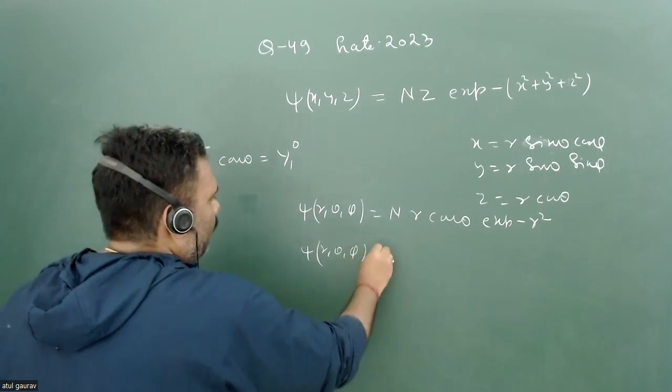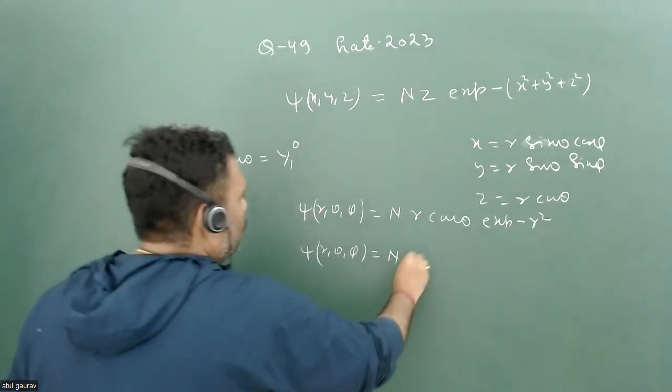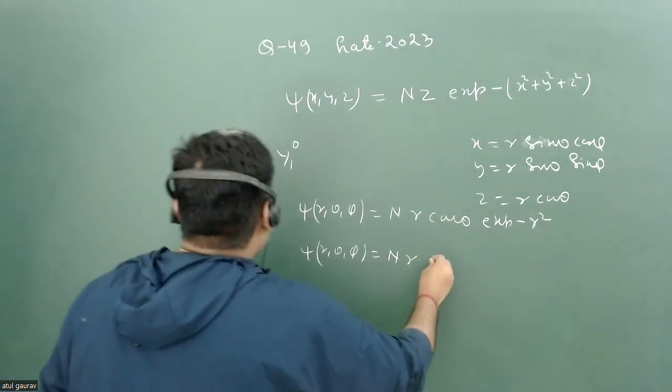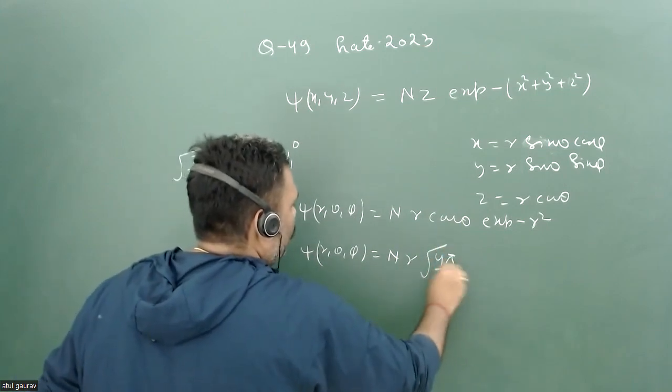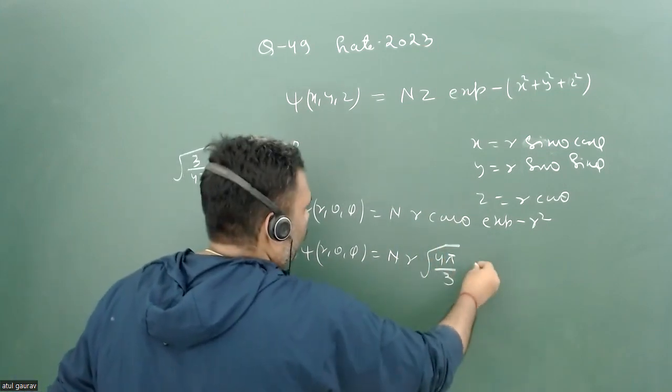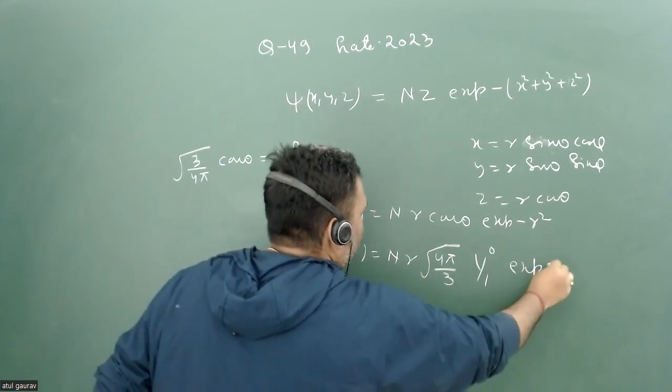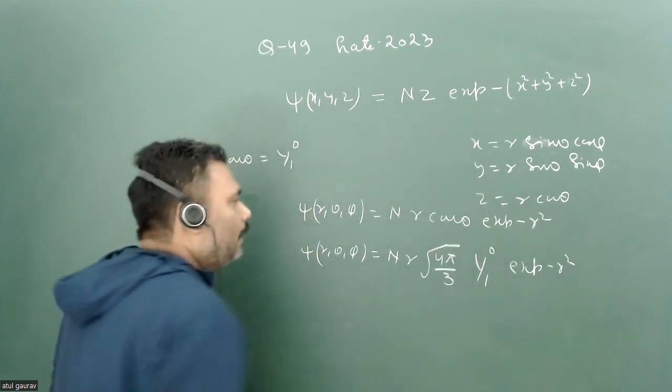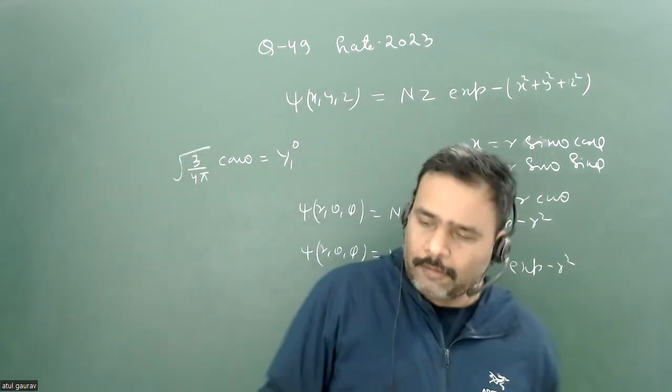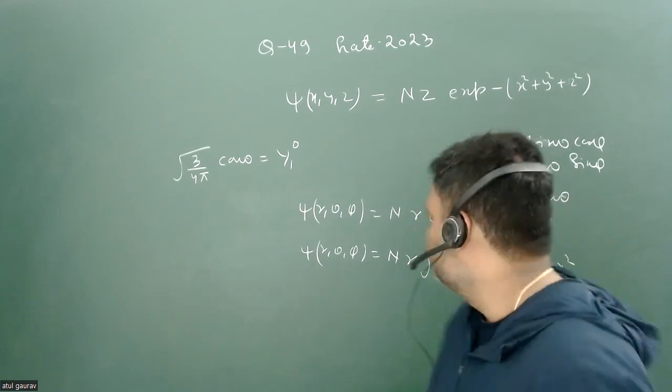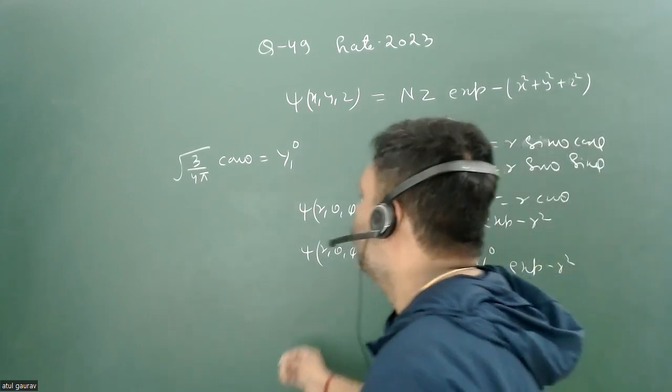Psi can be written in spherical harmonics so that cos theta equals 4 pi upon 3, and cos theta can be written as Y_1,0, times exponential minus r square. R square is the radial part, nothing to do with L square and Lz. So here we can identify the quantum numbers.